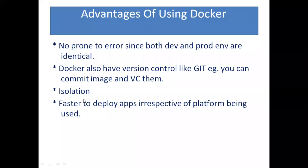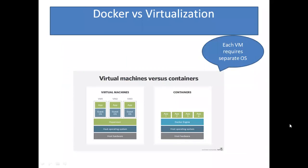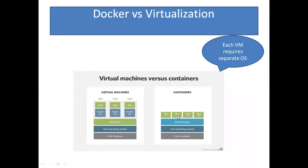Isolation is a great feature in Docker. One container cannot communicate with another container, so if one application is hacked or compromised, it won't affect the other applications on the same Docker host. Everything remains safe and isolated.